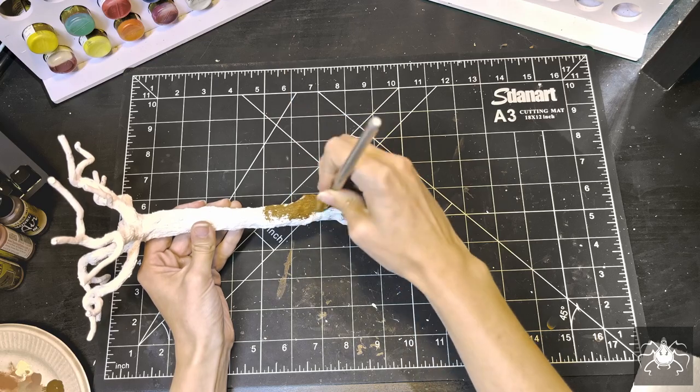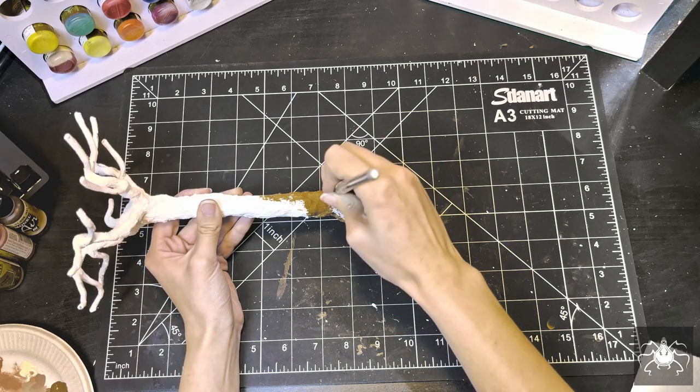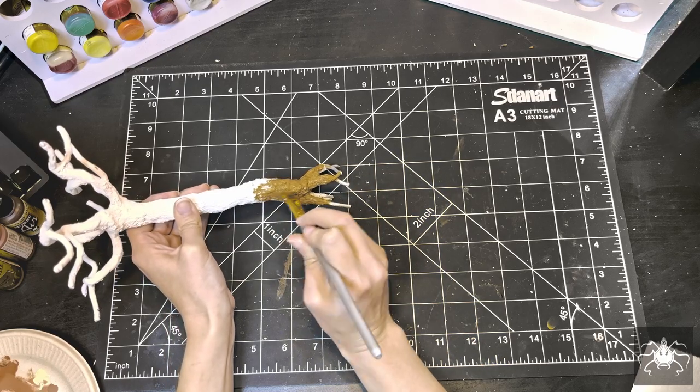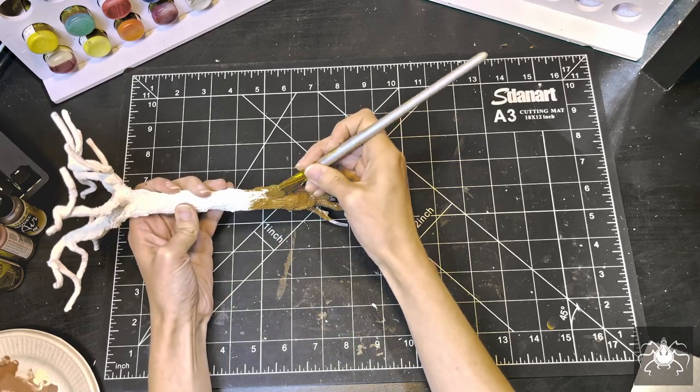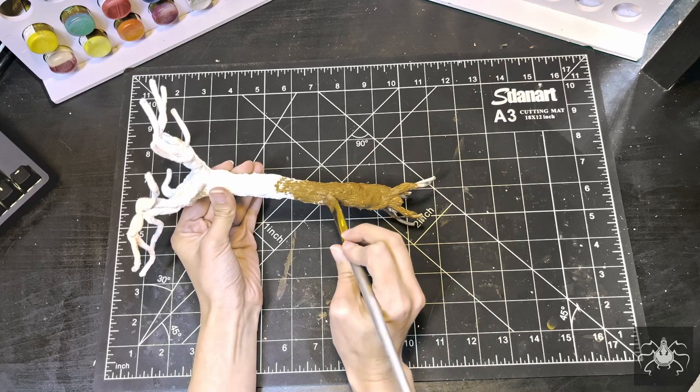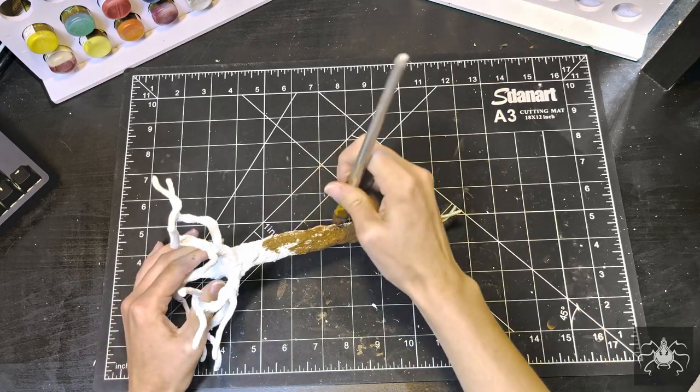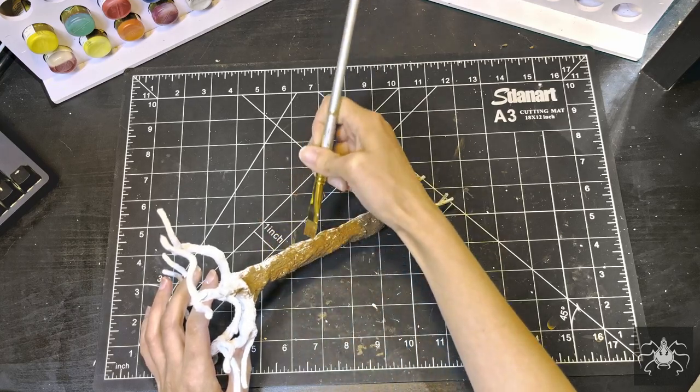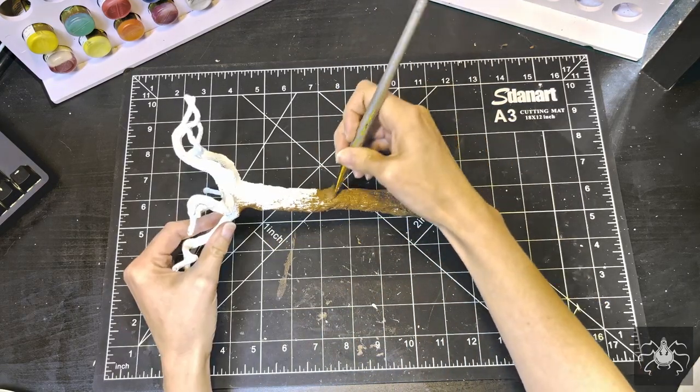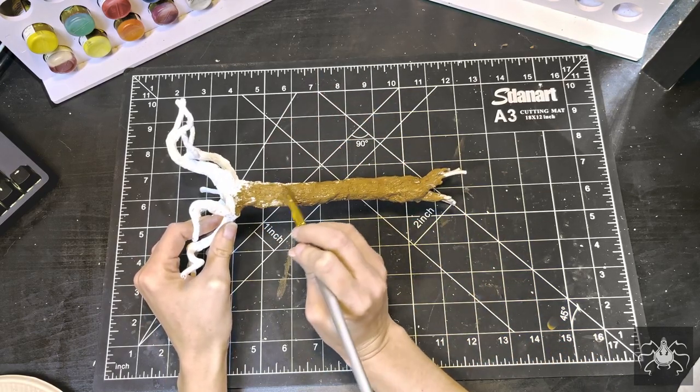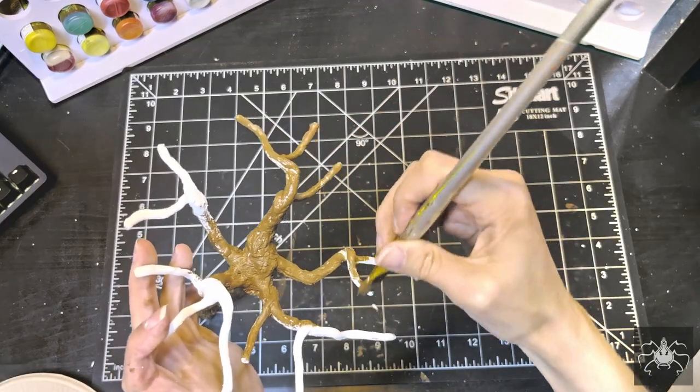After letting the milliput cure for a few hours, it's time to get to painting. I'm pretty indecisive when it comes to choosing a base color, but I settled on using just a standard light brown, or leather brown, from Army Painters. All I'm doing is laying down a solid color foundation here, making sure to cover all the white parts so that the wash and dry brushing stages can really work their magic.